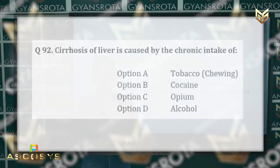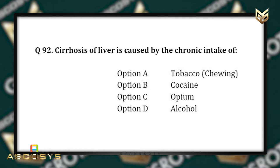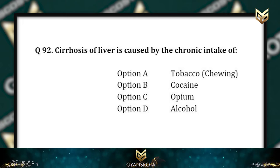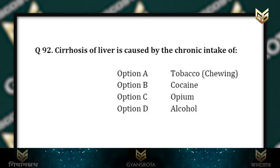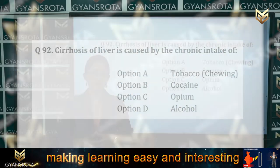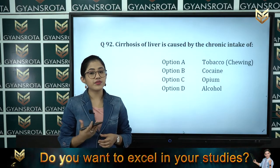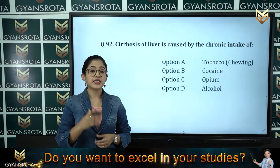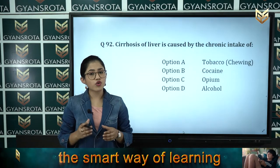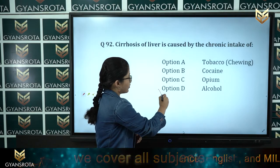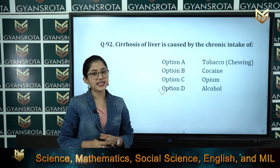Question number 92: Cirrhosis of liver is caused by the chronic intake of — Option A: tobacco, Option B: cocaine, Option C: opium, Option D: alcohol. Cirrhosis of liver is caused by the chronic intake of alcohol, so option D is the correct answer.